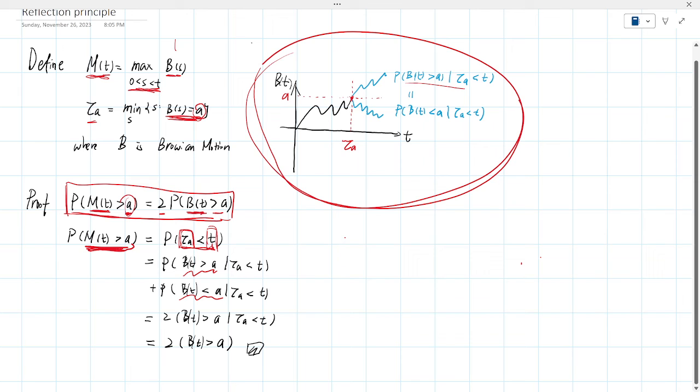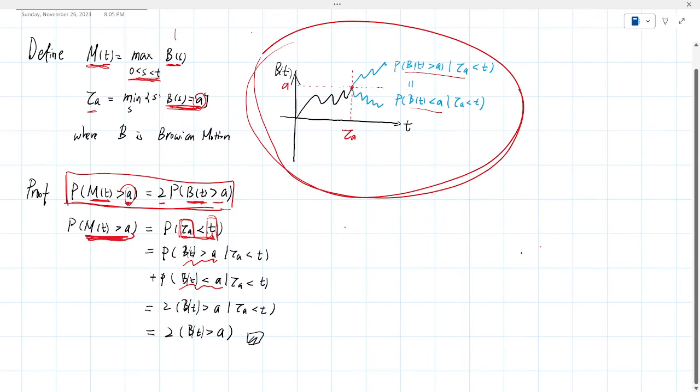So it's one greater than A, one less than A. Those two things should be symmetric as you would imagine after tau A.